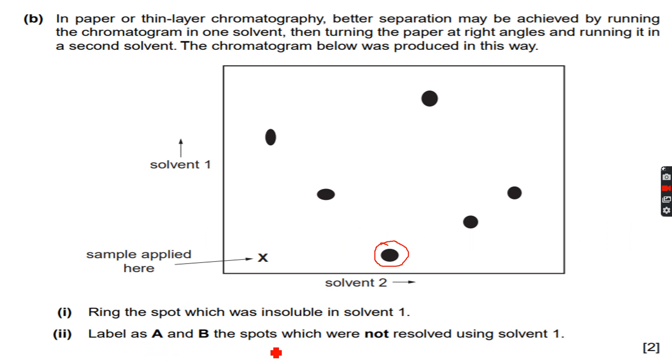Let's label as A and B the spots which were not resolved using solvent 1. So by not resolved means that both of them overlapped. So first we carried out with solvent 1. This one moved to this height, very unique height. This one moved to this height. This one did not move at all. This one moved to this height, another unique height.